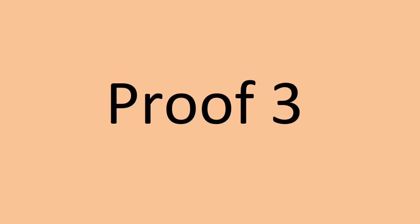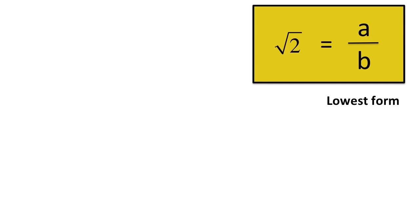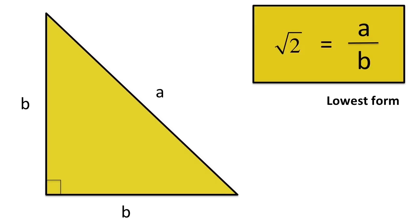Proof 3. The next proof realizes that if root 2 can be written as a over b in lowest form, then we can make this right isosceles triangle with sides a and b. First split the hypotenuse into two parts with links b and a minus b, then create this smaller triangle.